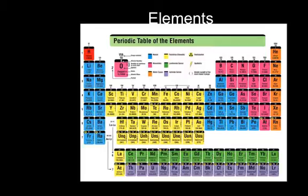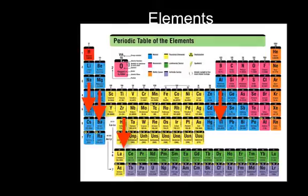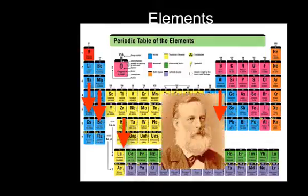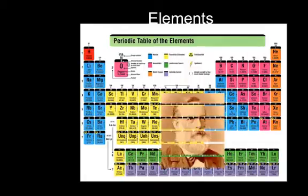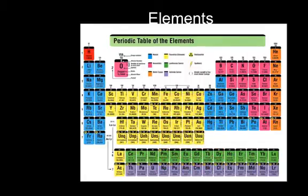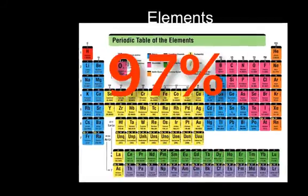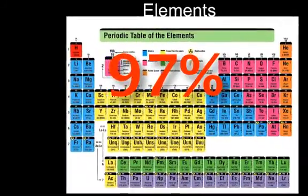The periodic table groups elements into families based on similar properties. A Russian chemist by the name of Dmitri Mendeleev, back in the 1800s, is credited for organizing the table in the way it is now. There are four elements that combined make up nearly 97 percent of matter in living things.